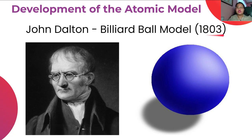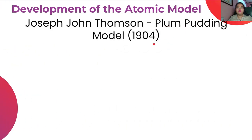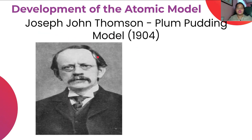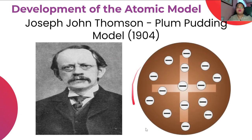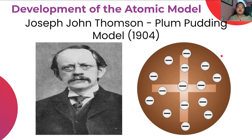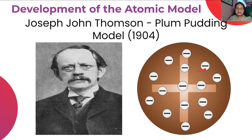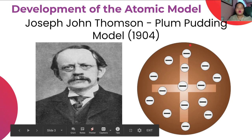This was during 1803. It is followed by the plum pudding model in 1904 by Joseph John Thompson. The plum pudding model, also called the raisin bond model, compared an atom to a slice of bread with raisins. The whole bread, or the whole atom, is positively charged, while the raisins inside represent the electrons or negatively charged particles.